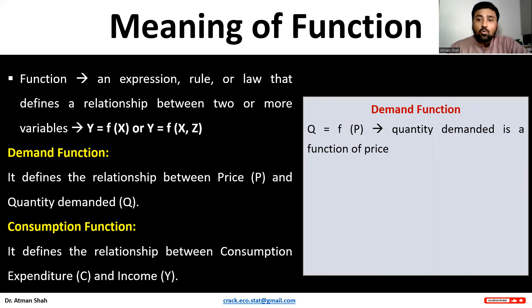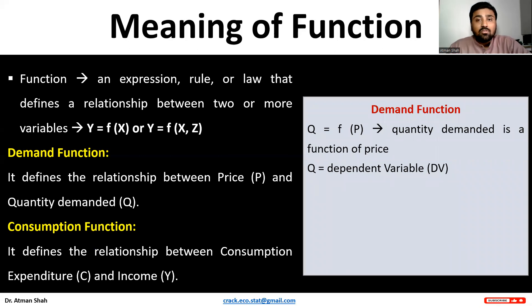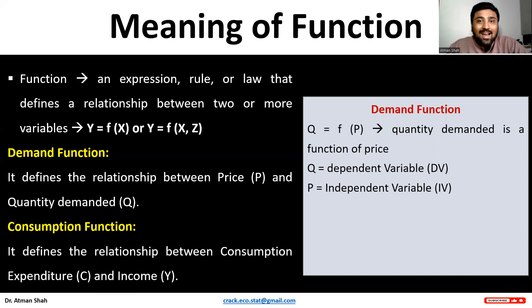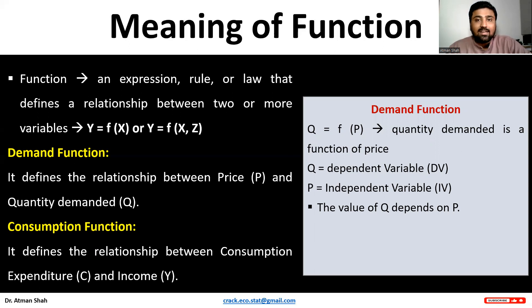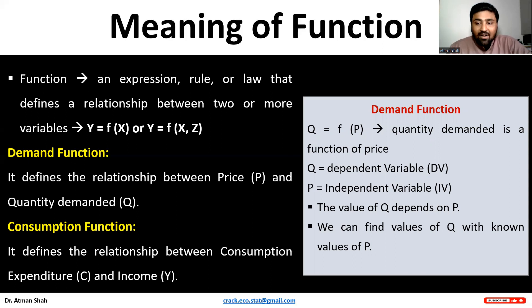From theory we know that quantity demanded is a function of price — quantity demanded depends on price. Therefore, quantity demanded is our dependent variable and price is our independent variable. When we define a function, we need to understand the idea of dependent and independent variables. The value of Q (quantity demanded) depends on price, and we can find values of quantity demanded with known values of price.